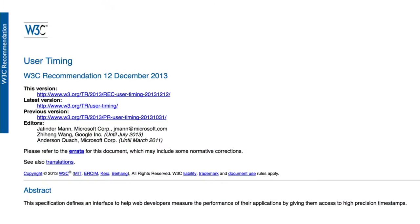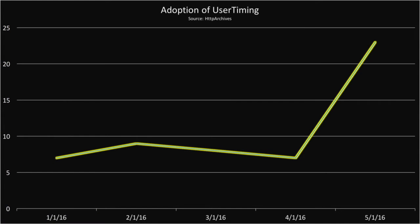But luckily out there for us, we have this thing called user timing. And user timing gives you the power to go ahead and measure exactly what you want on the page. But though it's a powerful tool, on the HTTP archive search, only 23 of the top thousand are actually using user timing.